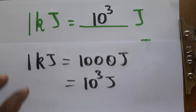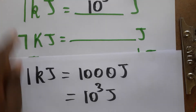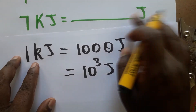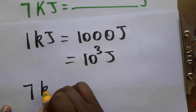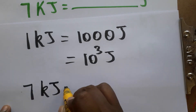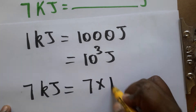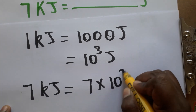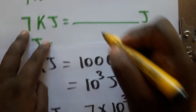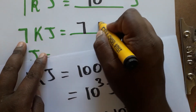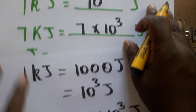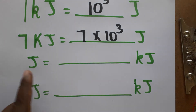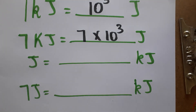Now we have an example: seven kilojoules is equal to how many joules? Seven kilojoules is equal to seven into one thousand, or seven into 10 power 3 joules — that is 7000 joules.